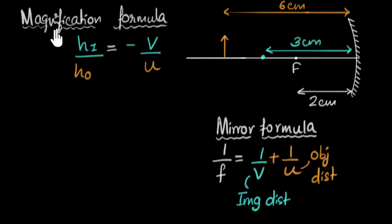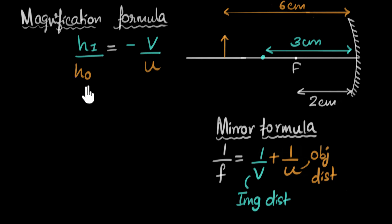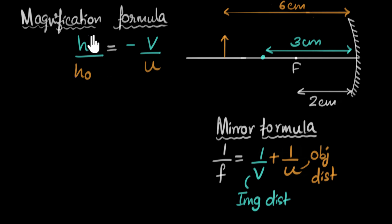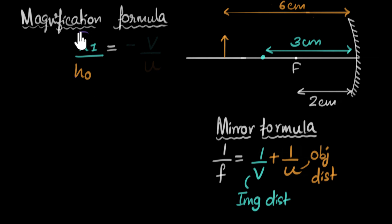We'll talk about why it's called magnification in a moment. Notice that on the left-hand side of this formula you have H — H stands for height. HI is the height of the image and HO is the height of the object. The ratio of the heights is what the magnification formula is about, and this ratio itself is called magnification.